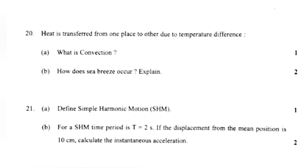Problem 21: (a) Define Simple Harmonic Motion (SHM). (b) For a SHM, time period is T equals 2 seconds. If the displacement from the mean position is 10 cm, calculate the instantaneous acceleration.